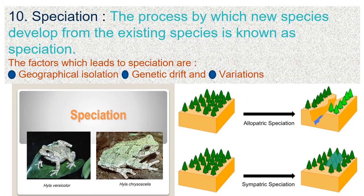Speciation: The process by which new species develop from existing species is known as speciation. The factors which lead to speciation are geographical isolation, genetic drift, and variation.